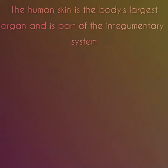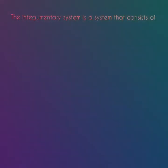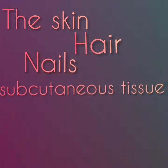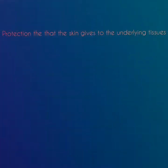First I will start with the human skin. The human skin is the body's largest organ and is part of the integumentary system. The integumentary system consists of the skin, hair, nails, the subcutaneous tissue, and glands. The most obvious function of the integumentary system is the protection that the skin gives to the underlying tissues.